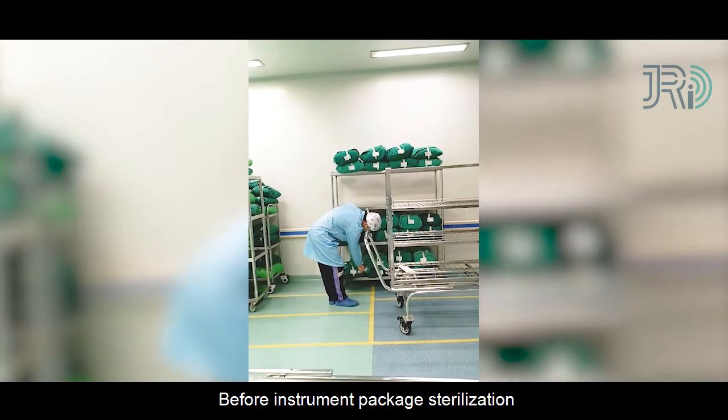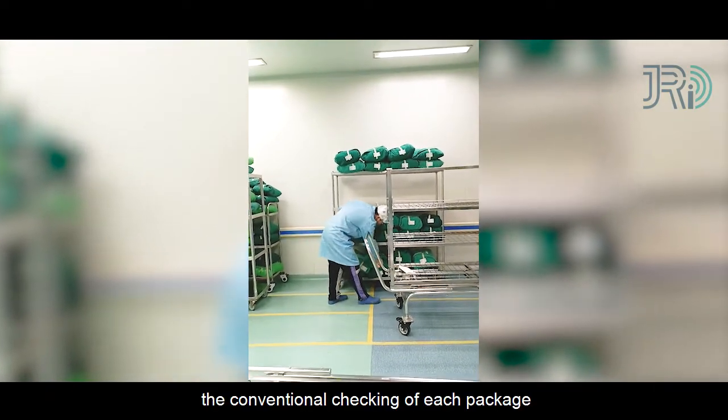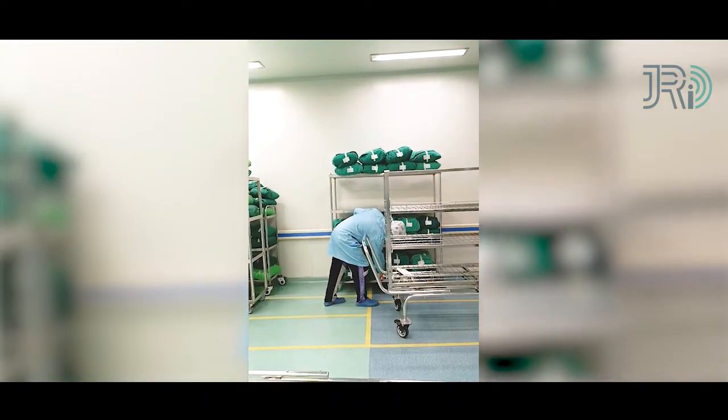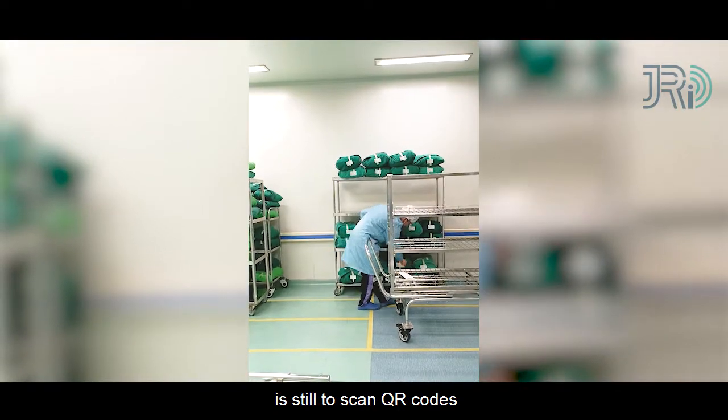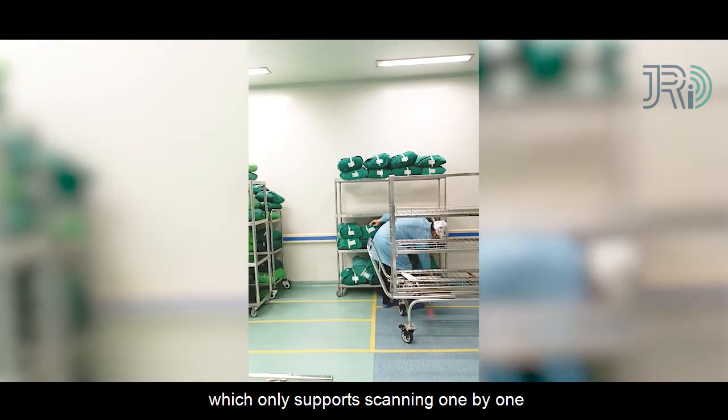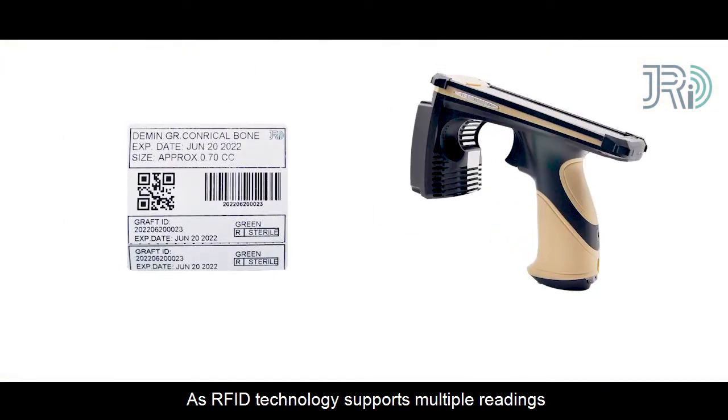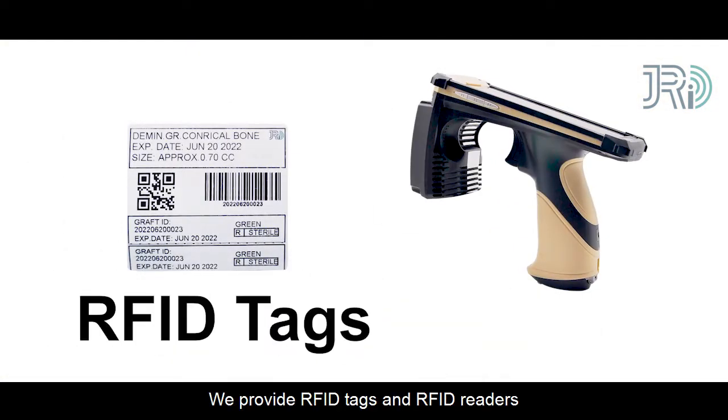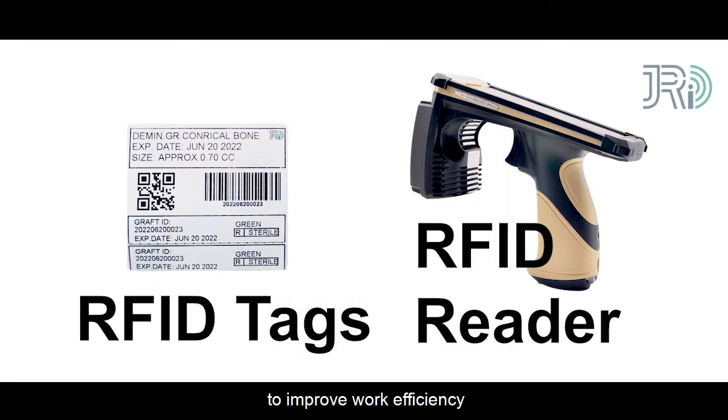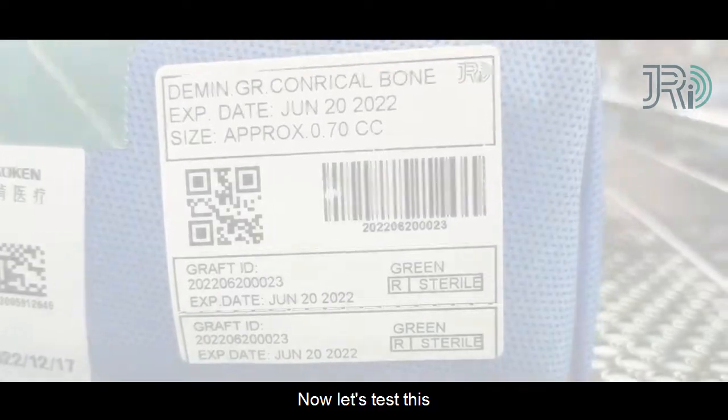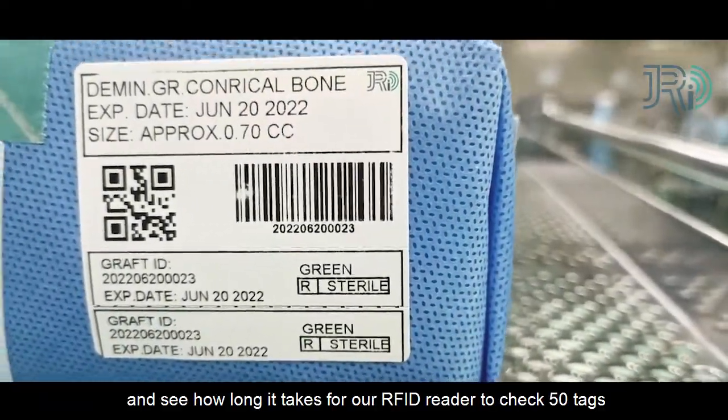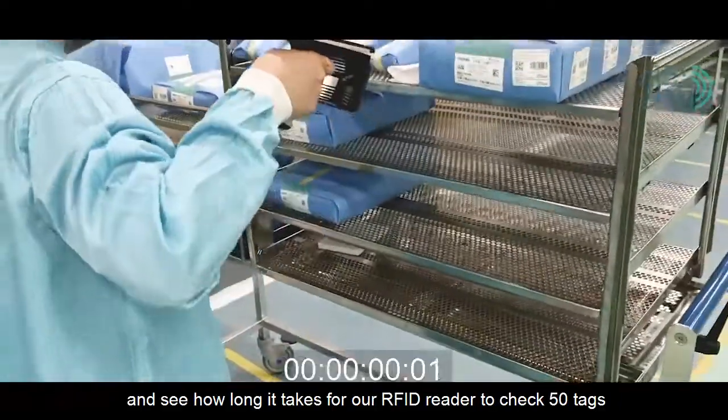Before instrument package sterilization, the conventional checking of each package is still to scan QR codes, which only supports scanning one by one. As RFID technology supports multiple readings, we provide RFID tags and RFID readers to improve work efficiency. Now, let's test this and see how long it takes for our RFID readers to check 50 tags.